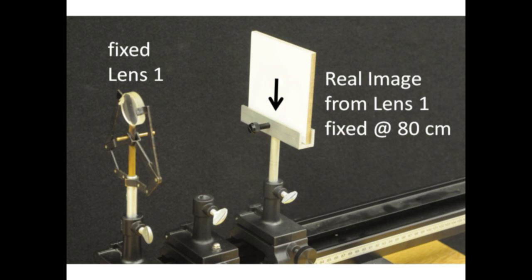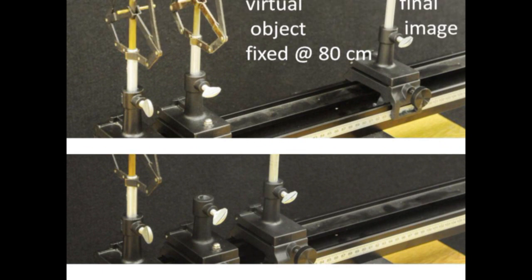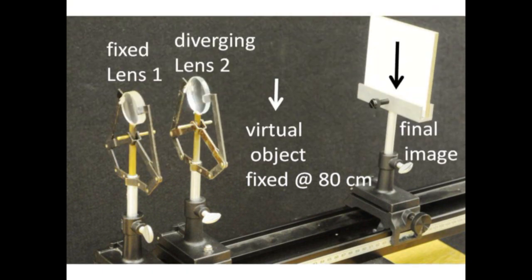Lock down the converging lens 1 and never move it. This ensures that the image from lens 1 will remain at 80 cm throughout the experiment. Place the diverging lens 2 at the 70 cm position and carefully locate the final image.